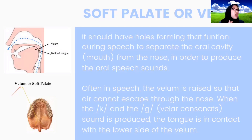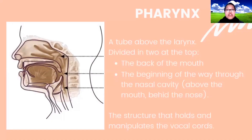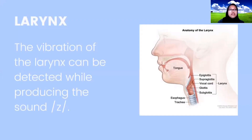Next is the pharynx. The pharynx is a tube above the larynx divided into two at the top — the back of the mouth and the beginning of the nasal cavity, above the mouth behind the nose — the structure that holds and manipulates the vocal cords. The vibration of the larynx can be detected while producing the sound Z.